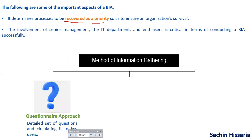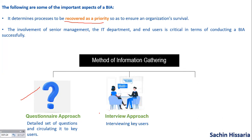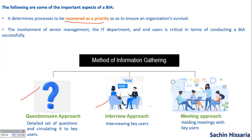There are three methods of gathering information. First is the questionnaire approach: you will prepare a detailed set of questions and circulate this questionnaire to the process owner. The second approach is the interview approach: you will be doing an interview of the key business process owners. The third approach is the meeting approach: you will hold a meeting with the process owner.